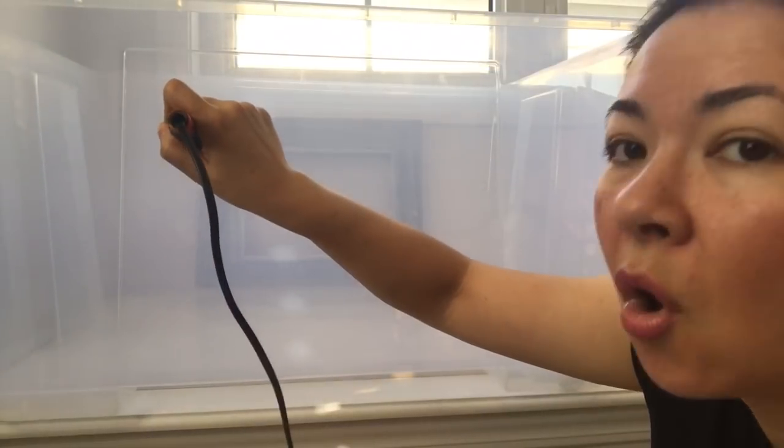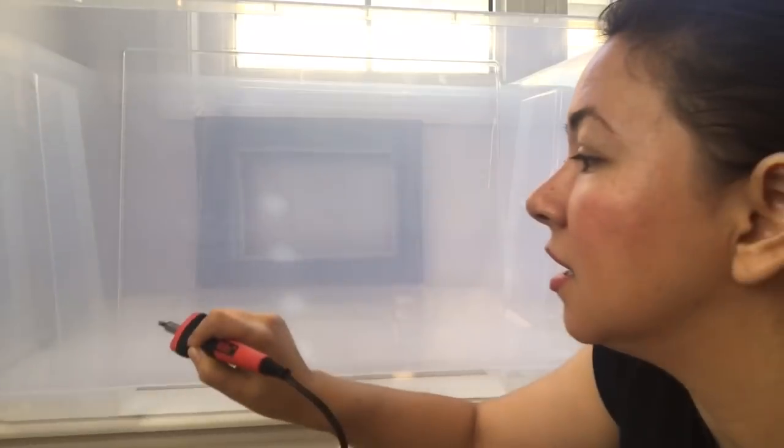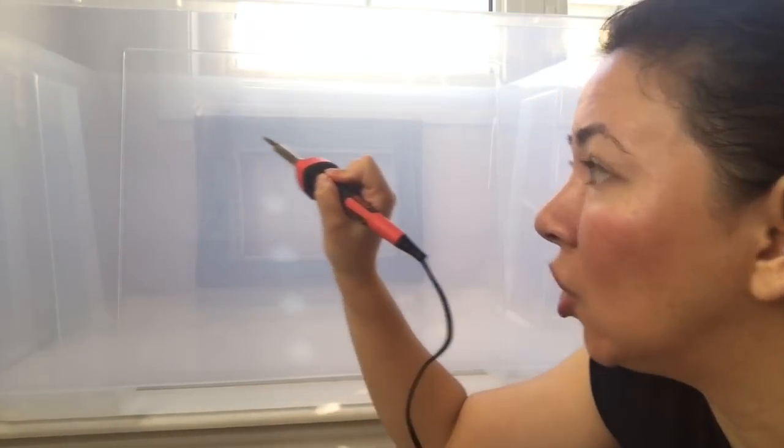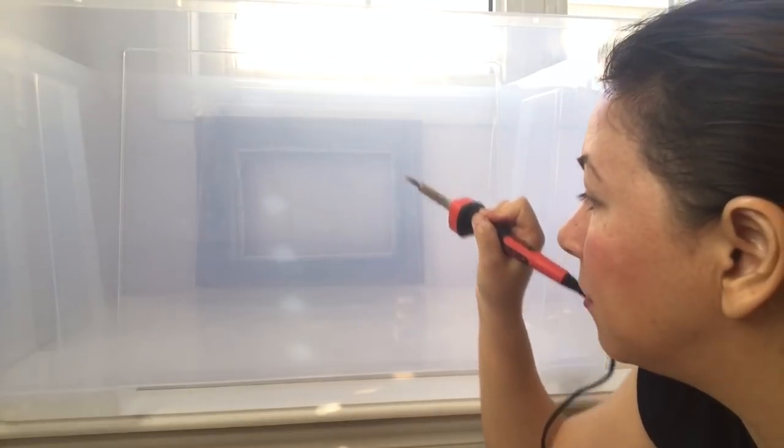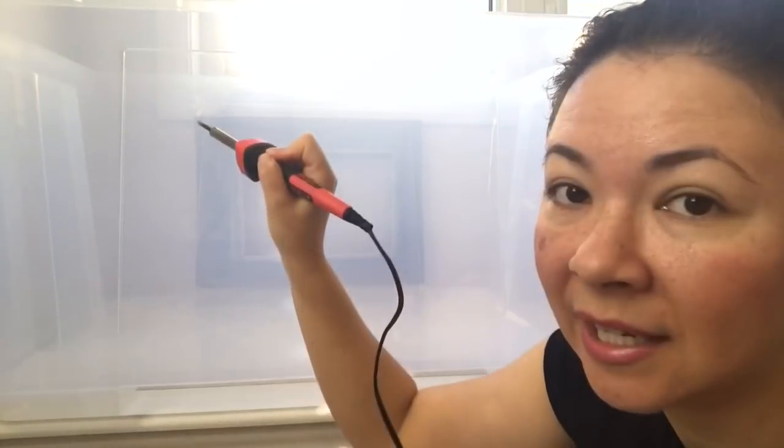And how I did it was once my soldering tool, whatever this is called, once it was hot, I just burned holes in the four corners of where I wanted the panel to be. And then I just eyeballed it across and melted it out like so. Here's some footage of me doing that.